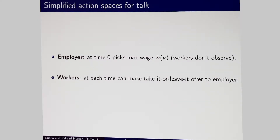The action spaces are simple. The employer makes one decision: they pick a maximum wage W bar after observing their value V, which is the highest they're willing to pay for labor. This choice is private. Workers can choose at any time to negotiate for salaries by making take-it-or-leave-it offers. Workers can renegotiate as often as they want — they have some flexibility.